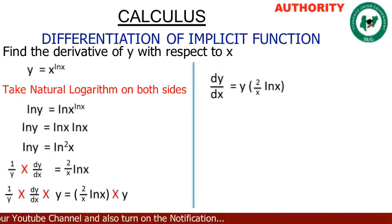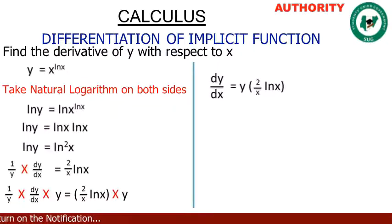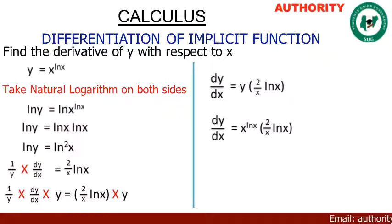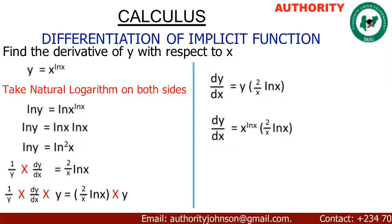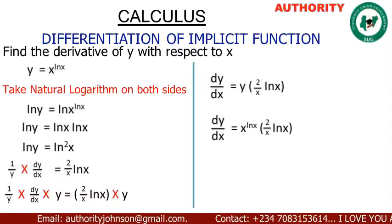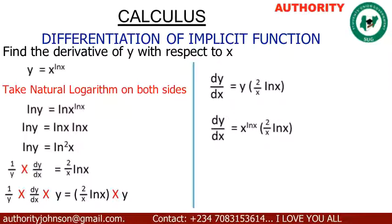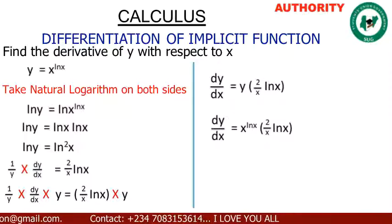We substitute y = x^(ln x) back into the expression. Therefore, dy/dx = x^(ln x) · [2/(x · ln x)]. That is the derivative of the function y with respect to x. Thank you.